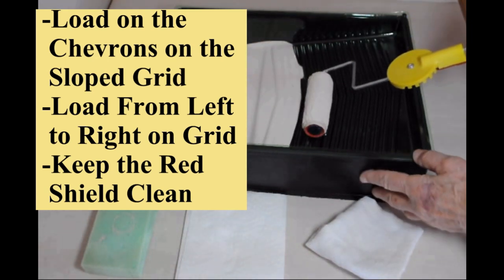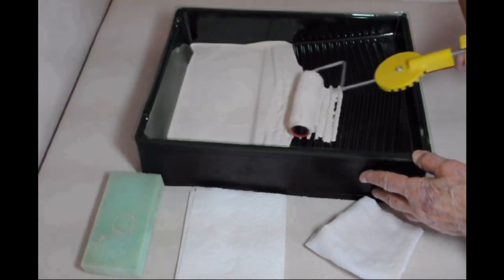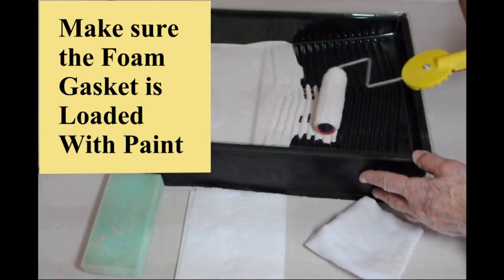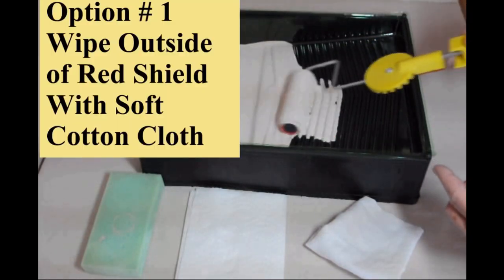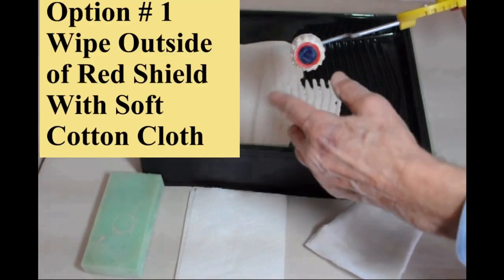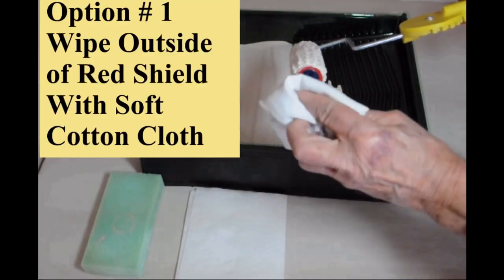Do not go down into the well or do not immerse the roller. Roll back and forth on the grid, making sure the foam gasket is covered in paint. After you have loaded the roller, keeping the outside of the red shield clean is important.